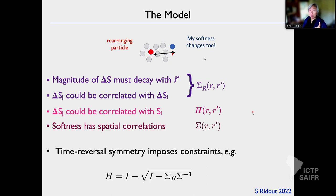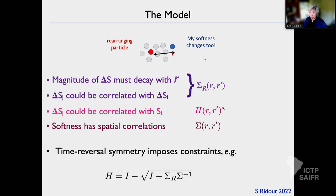Once you say this — how does the magnitude of the change of softness depend on the change of softness over here? — and ask what are the correlations of softness, that actually dictates how the change of softness here can depend on the softness over here. So there are constraints, and I'll explain that a little more in a bit.